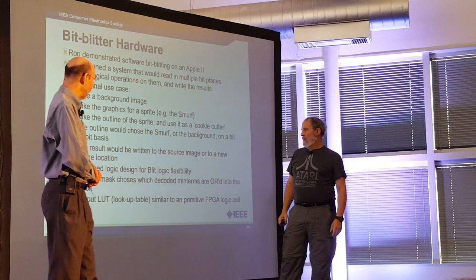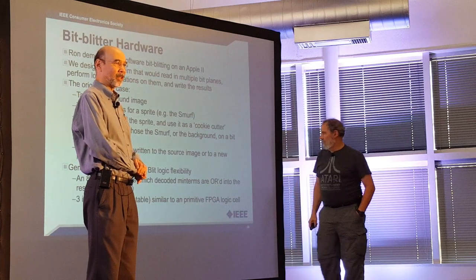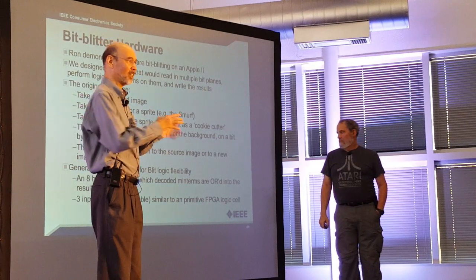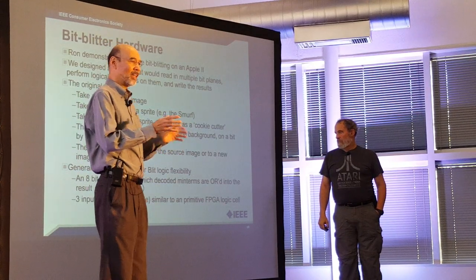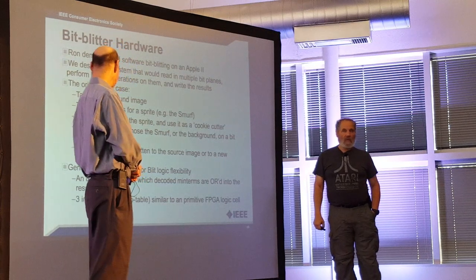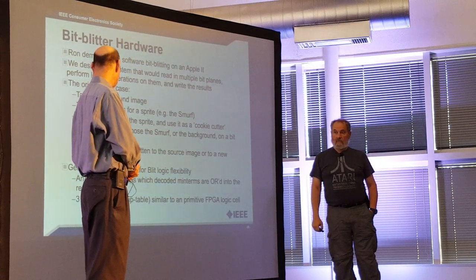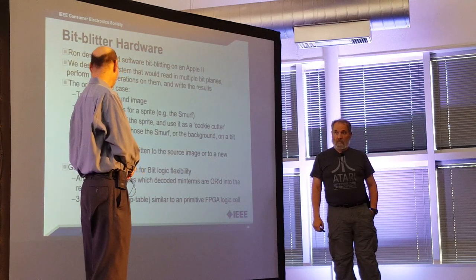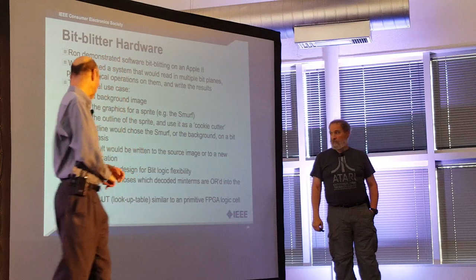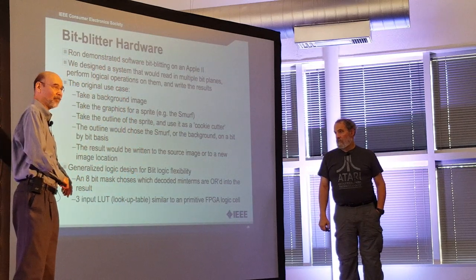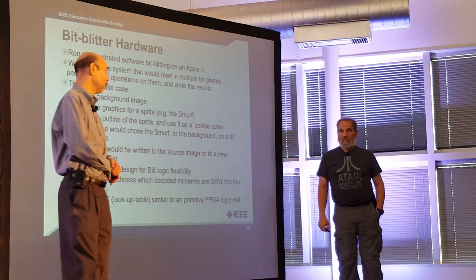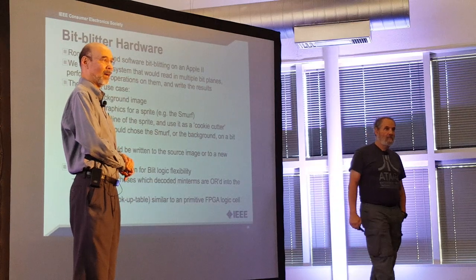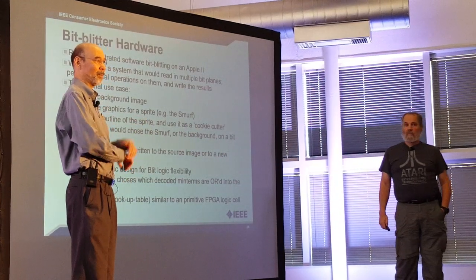The bit blitter is radically faster than software-driven compositing. We couldn't decide which logic operations to put in the blitter for various animations, so Jay and I came up with the idea of making the blitter logic completely flexible. We essentially reinvented what today would be called a three-input lookup table in an FPGA — that became the ALU for the blitter, allowing it to do any function of three variables, giving software developers enormous flexibility.